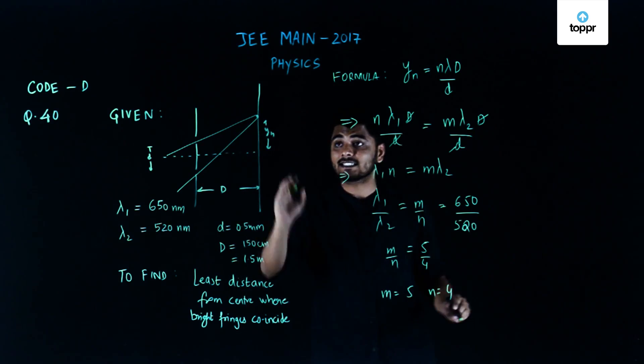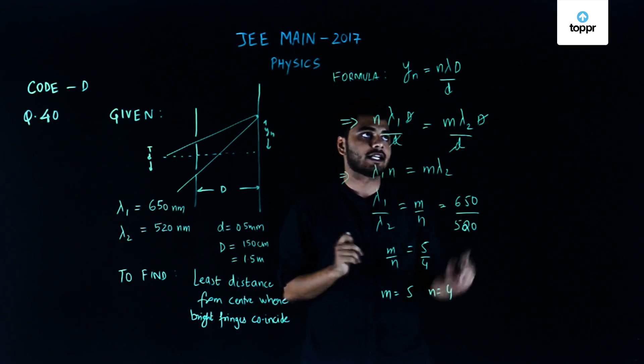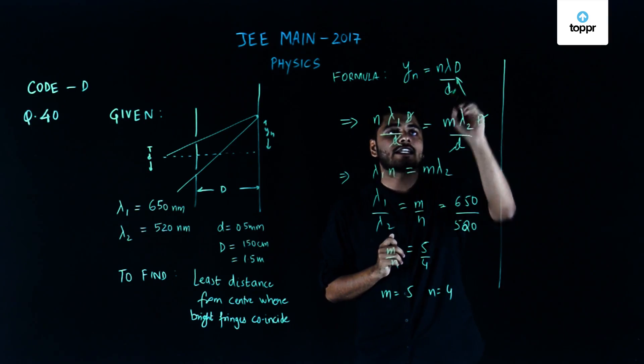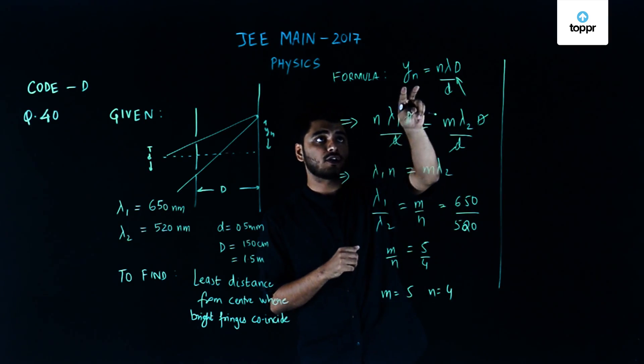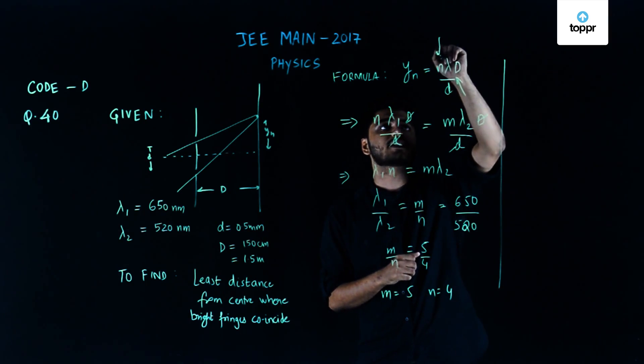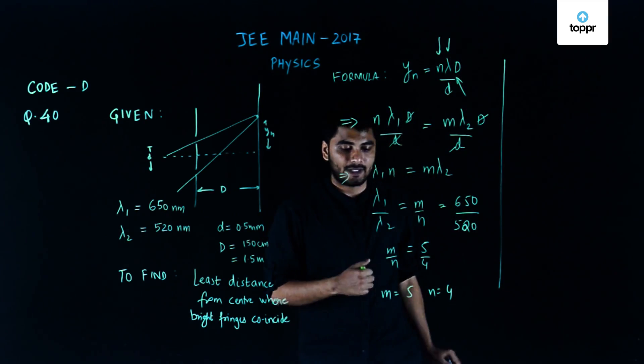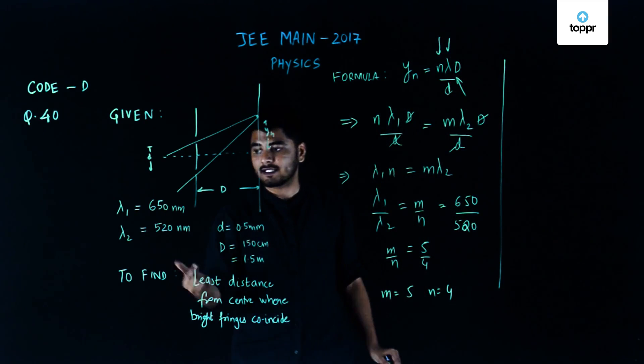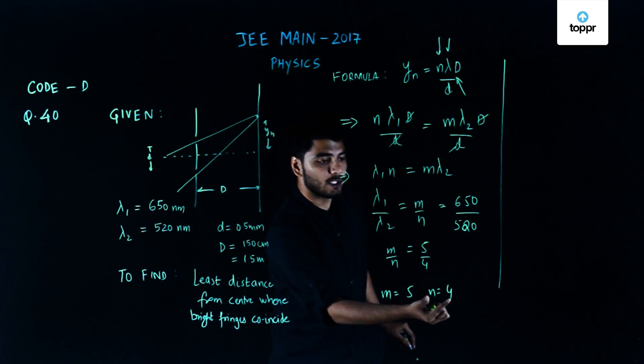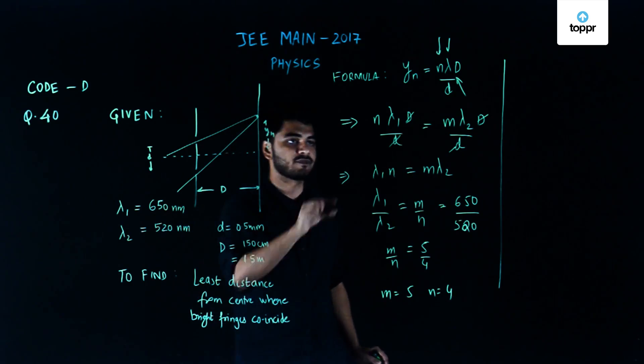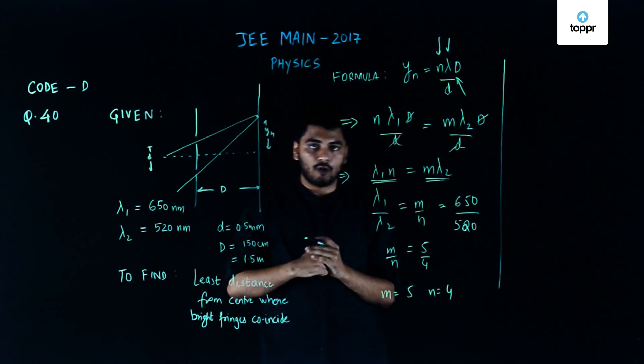Now in order to find the distance, the y coordinate, we can just use this equation. The only thing to take care of is that we must take the proper combination of n and lambda. For example, m equals 5 represents lambda 2 and n equals 4 represents lambda 1, since we have taken them as follows.